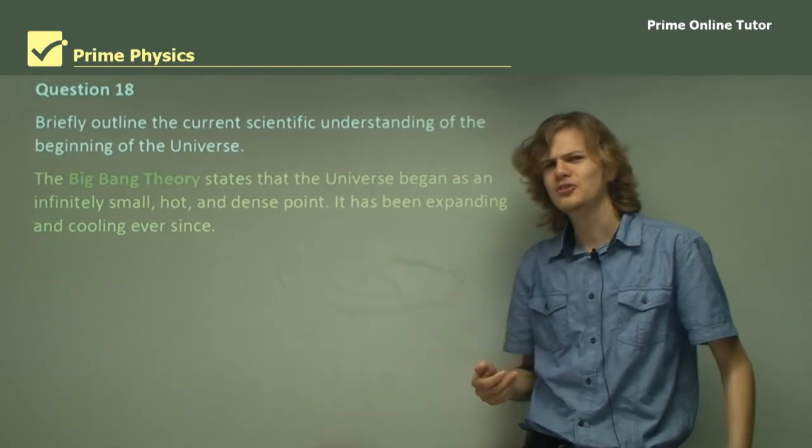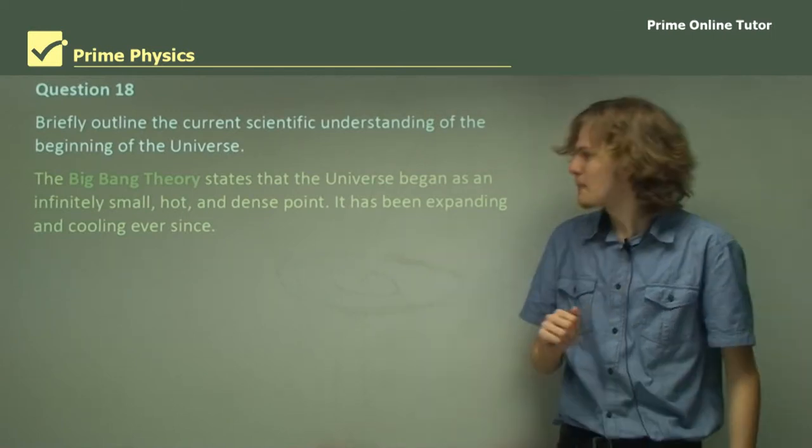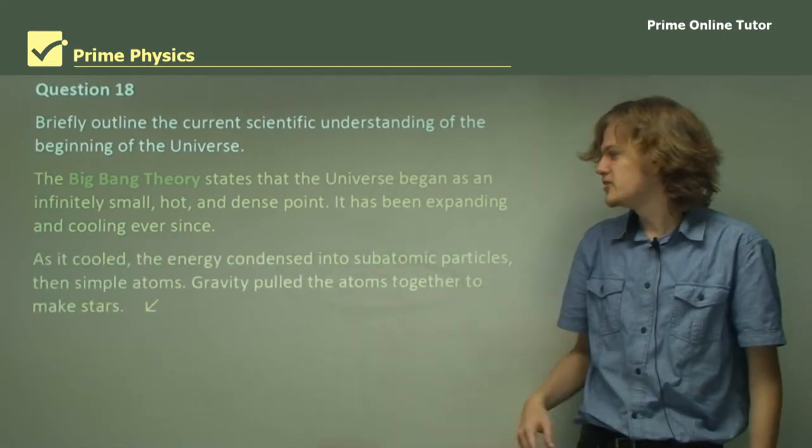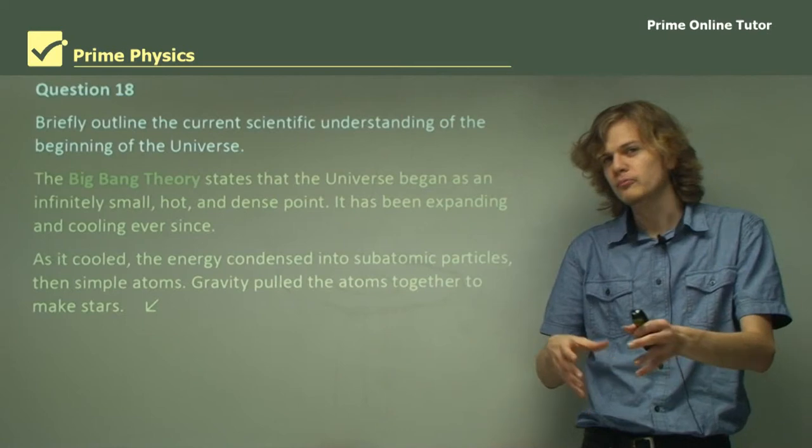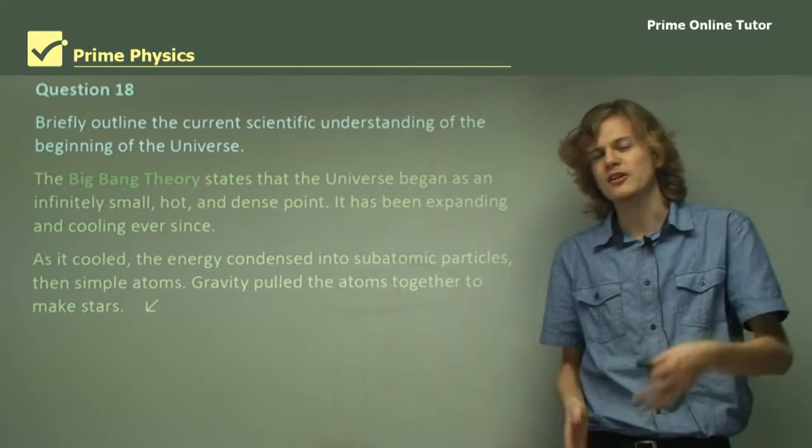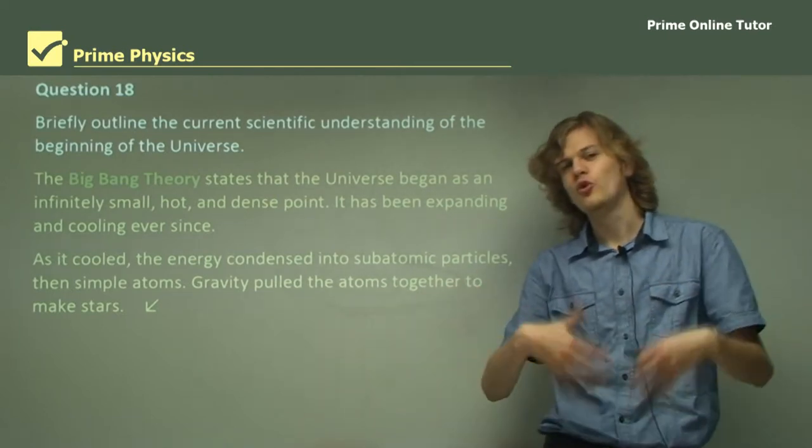And it has been expanding and cooling ever since. As you have noticed, the universe is no longer infinitely small and dense. As it cooled, the energy condensed into subatomic particles, which then condensed into atoms like hydrogen and helium. And then gravity was able to pull those together to form stars.